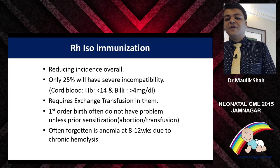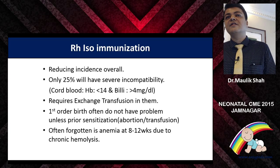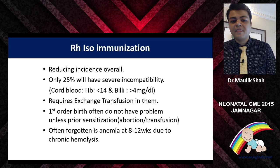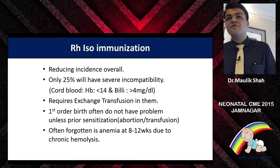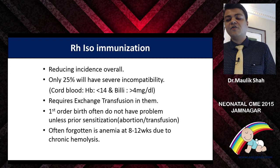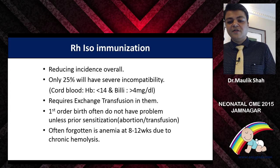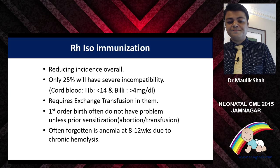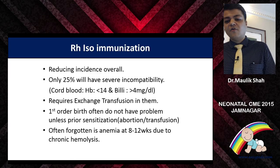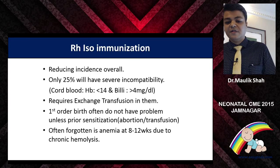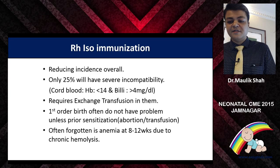RH isoimmunization overall incidence is reducing with anti-D given to the mother in time. Only 25% of those who develop isoimmunization go on to have an incompatibility of a severe nature where cord blood hemoglobin reduces and bilirubin is high right from zero hours. It requires exchange transfusion in most of them. First-order births often survive because of late sensitization.